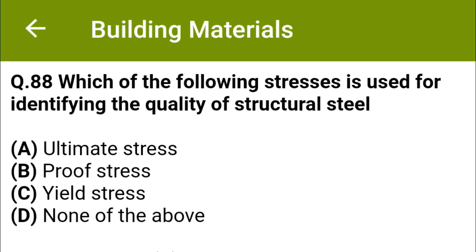Which of the following stresses is used for identifying the quality of structural steel? Option A, ultimate stress; option B, proof stress; option C, yield stress; option D, none of the above. The correct answer is option C, yield stress.